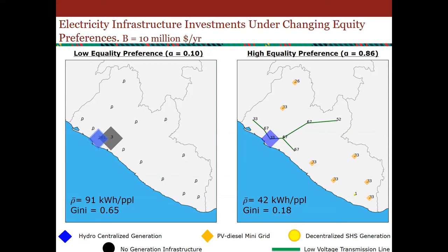A question from Megan at Global Good and Intellectual Ventures: are we considering the nationally determined contributions for Liberia in the model in regard to the budget, or is there a plan to inform the NDCs? We are not including those right now — that would need to be discussed with collaborators who have been mostly communicating with people in the country.